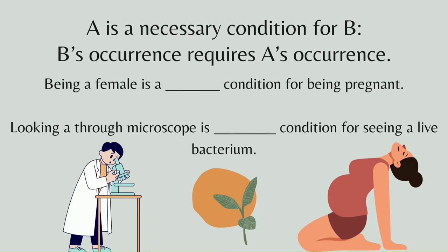Because if pregnancy is a sufficient condition, then being female is a necessary condition. Another example: Looking at a raw microscope is a necessary condition for seeing a live bacterium — because you need a microscope to see a live bacterium. It is impossible to see a live bacterium without using a microscope.